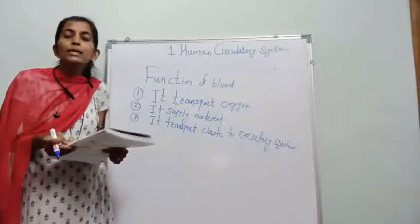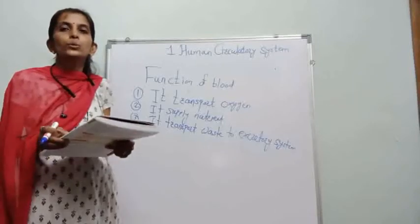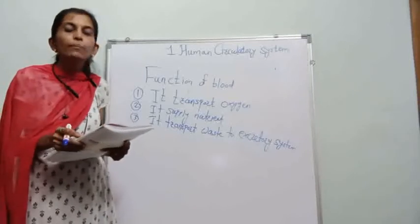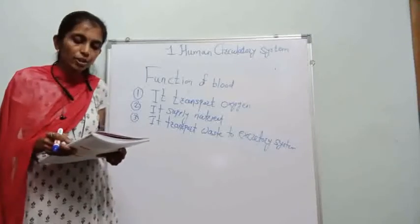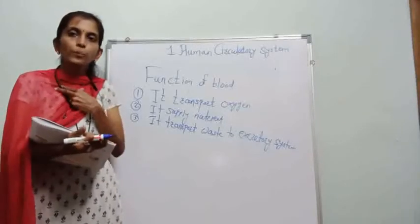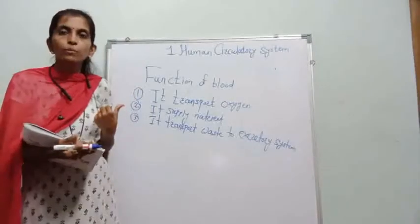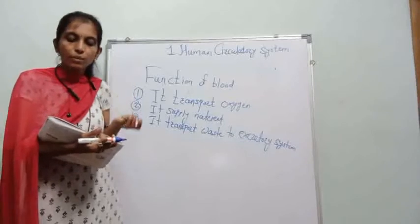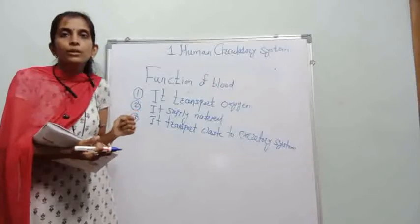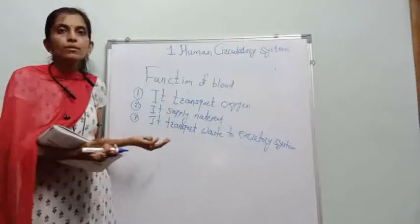The fourth function is that blood helps maintain the body temperature. The fifth function is that WBCs protect our body from infections and germs. The sixth function is that platelets help in blood clotting. These are the six functions of blood.